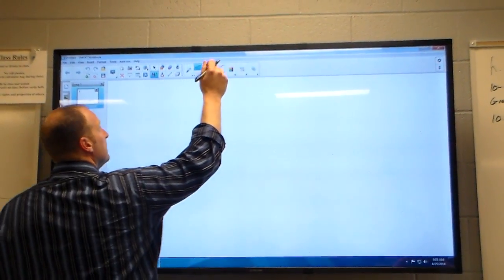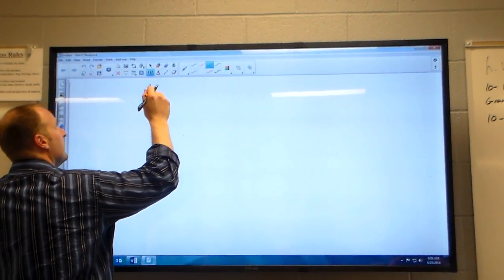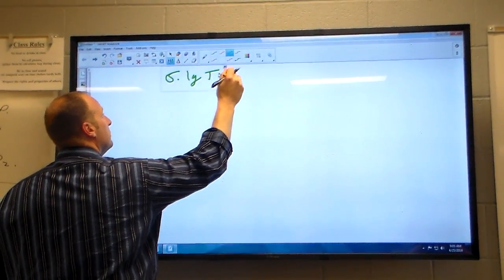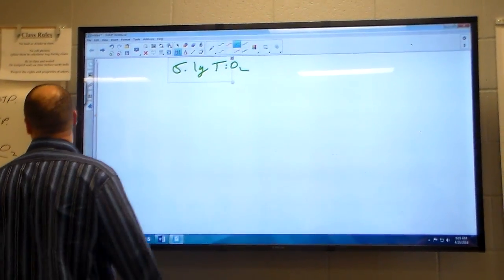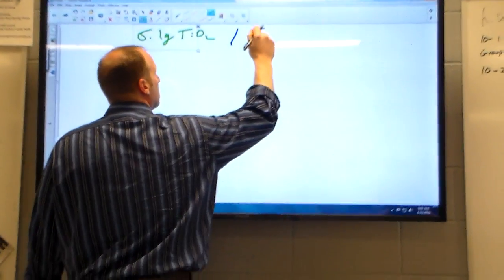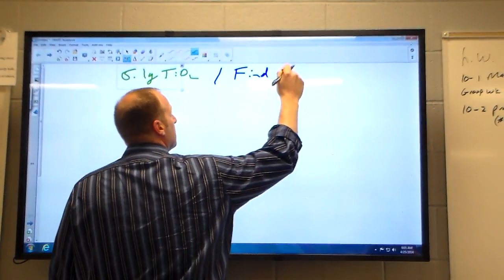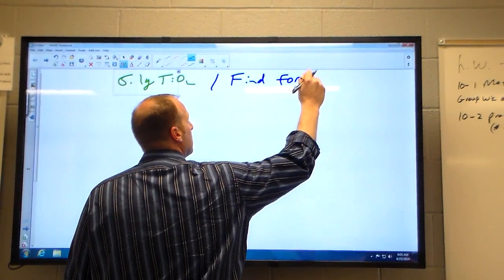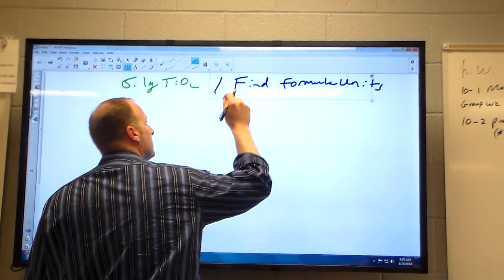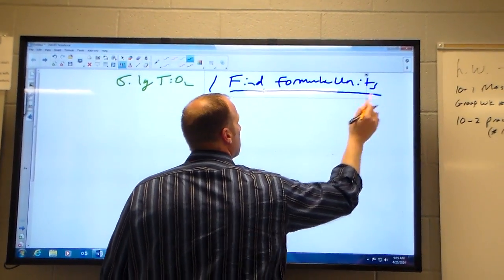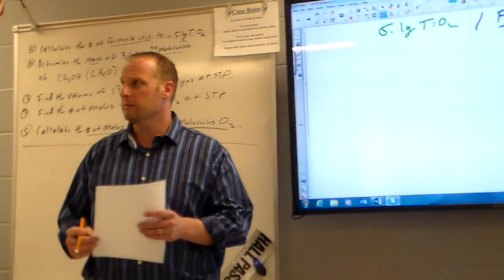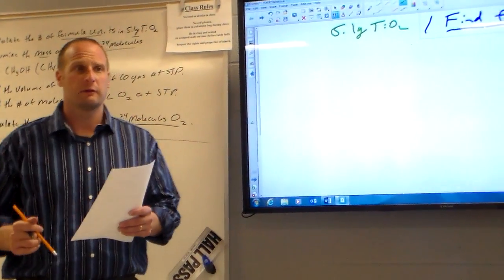We know two things here in this problem. We've got 5.1 grams of TiO2 here again, and the problem asks for formula units. Now, formula units, that's another term for what on our concept map? Representative particles.